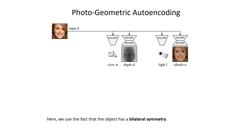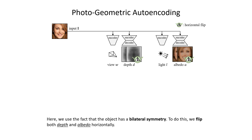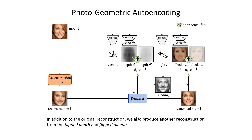Here, we use the fact that the object has a bilateral symmetry. To do this, we flip both depth and albedo horizontally. In addition to the original reconstruction, we also produce another reconstruction from the flipped depth and flipped albedo.